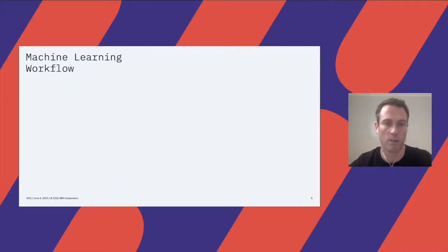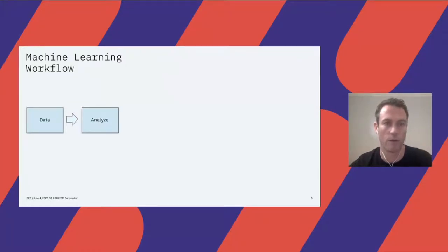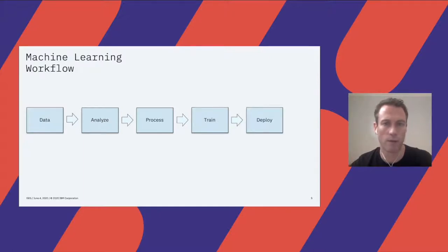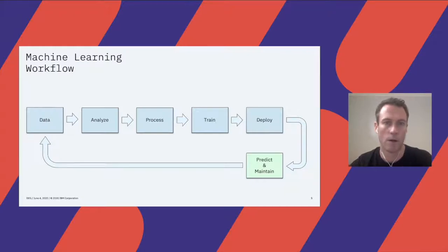We'll start with the basic machine learning workflow. We start with data, analyze it, and then typically train a machine learning model. Our data typically doesn't arrive in a nicely packaged format — it arrives raw and we need to convert it, preprocess it, and do feature transformation and extraction to get it into a form amenable to machine learning, typically feature vectors and tensors. We then train a model, deploy it to a live environment where it predicts on new data, turning this workflow into a loop. The three main compute-intensive areas are data processing, model training, and model deployment.